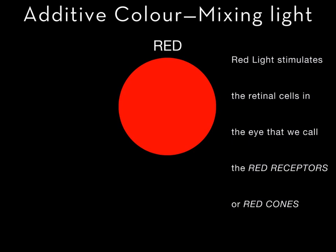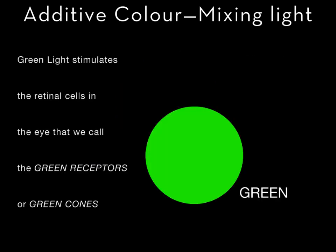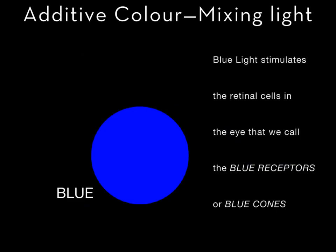Red stimulates the retinal cells in the eye that we call the red receptors or red cones. Green stimulates the retinal cells in the eye that we call the green receptors or green cones. Blue light stimulates the retinal cells in the eye that we call the blue receptors or blue cones.